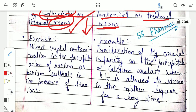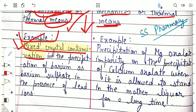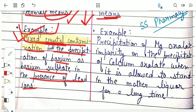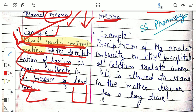Now let us look at an example of each. For co-precipitation, we take the example of mixed crystal contamination — a type of co-precipitation discussed in the previous video. In the precipitation of barium as barium sulfate (BaSO₄) in the presence of lead ions, there is a high chance that along with BaSO₄, some lead sulfate (PbSO₄) also precipitates. This is an example of co-precipitation through mixed crystal contamination.